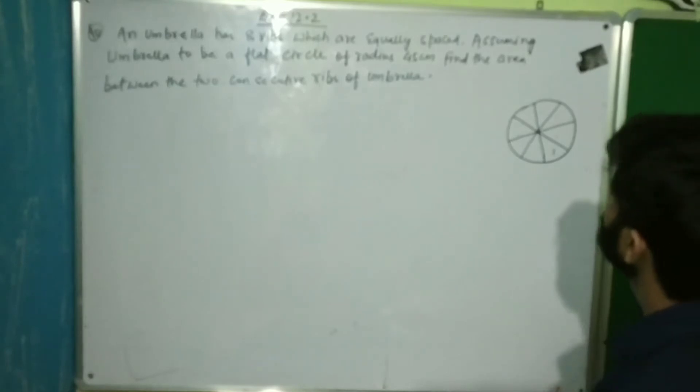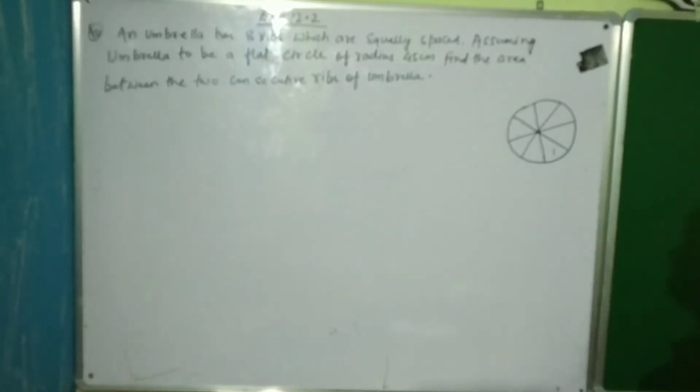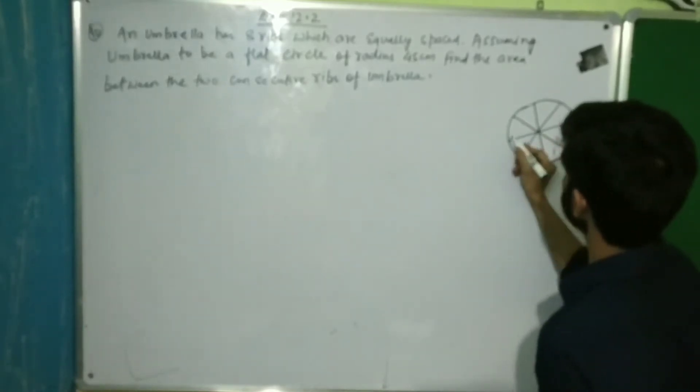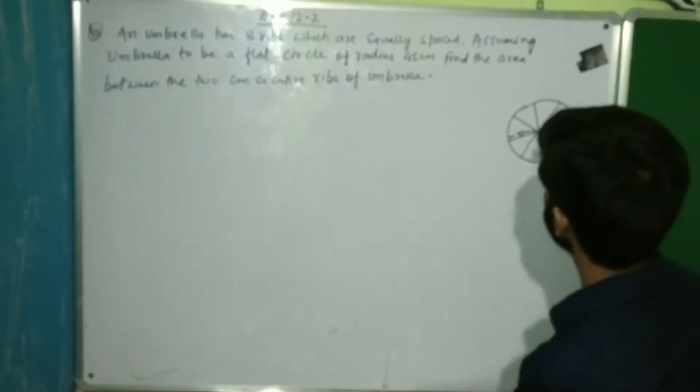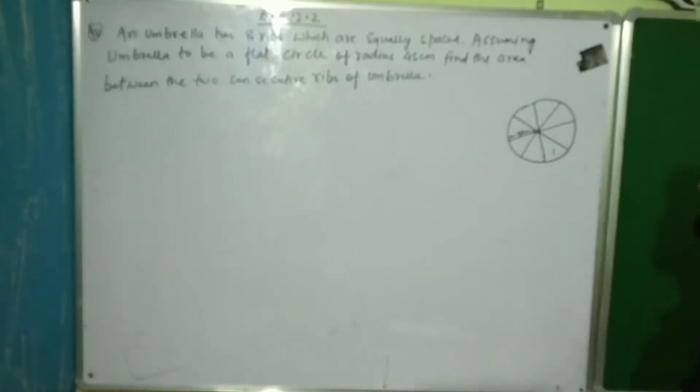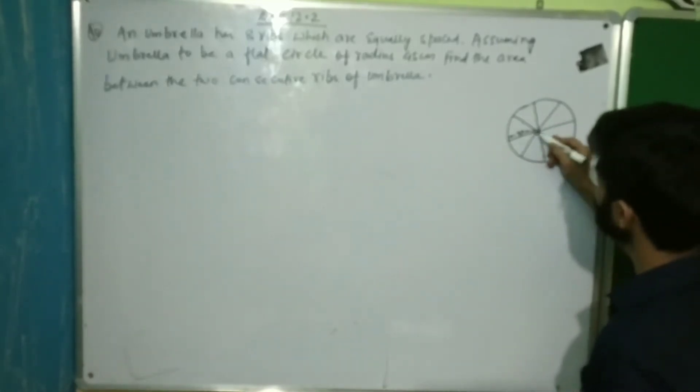What is equally spaced, assuming to be an umbrella to be a flat circle of radius? Flat circle, how much radius is it? Here it is, 45 cm. Find the area between the two consecutive ribs. Two consecutive ribs, what is the area? It's this rib and this rib.